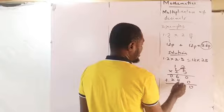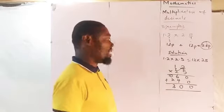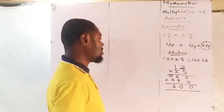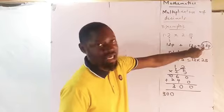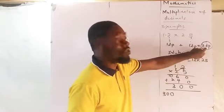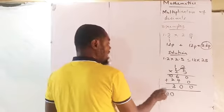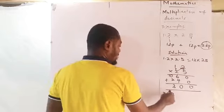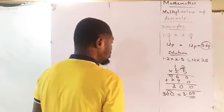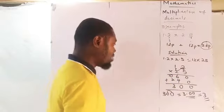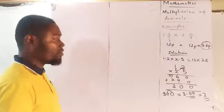Add the results: 0, then 10 — carry 1 — giving 3. So your answer without decimal is 300. But remember what was given was a decimal multiplication. Since our total decimal places were 2, start from the unit number and count two numbers before the point: 1, 2 — then put your point. So your answer is 3.00, which is the same as 3, because those trailing zeros are not significant.